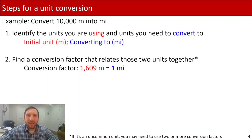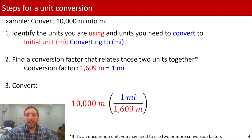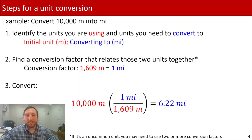Now that we have our conversion factor, we go to the third step: convert. We've got our 10,000 meters, and we're going to multiply by our conversion factor — one mile over 1,609 meters. Notice I have the mile in the numerator and the meters in the denominator, because I need the meters units to cancel out. The 10,000 meters is in the numerator, and the 1,609 meters in the conversion factor is in the denominator. That leaves us with miles, which is what we want. Multiplying everything out, we get 6.22 miles. So if somebody is running a 10K, they're running a little over six miles.